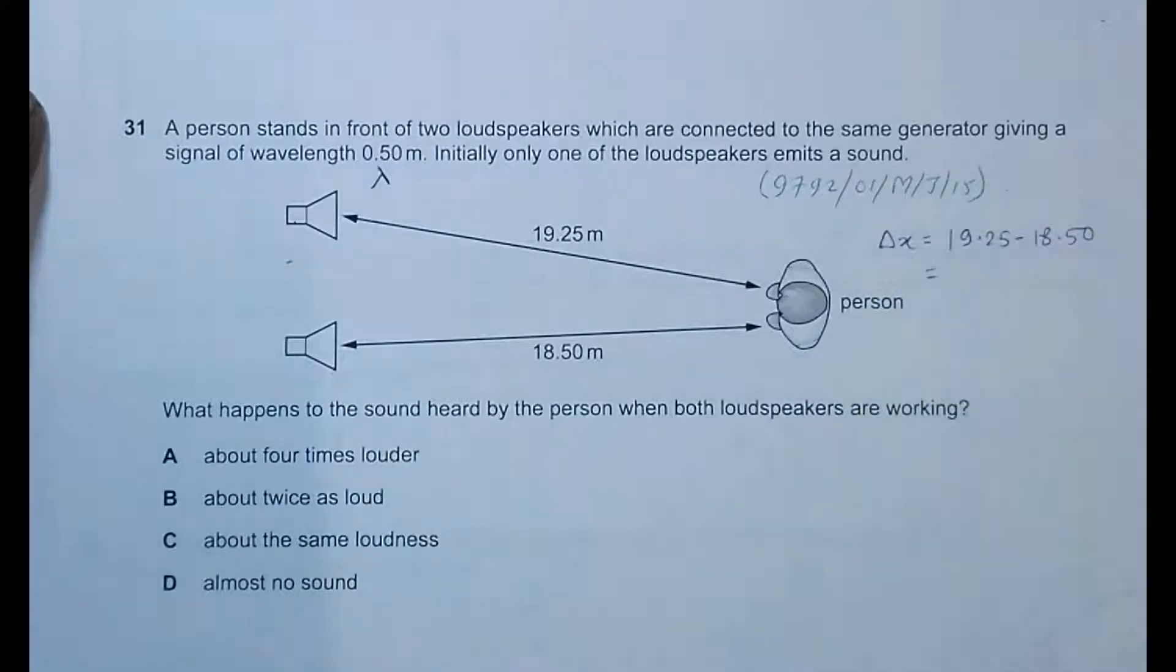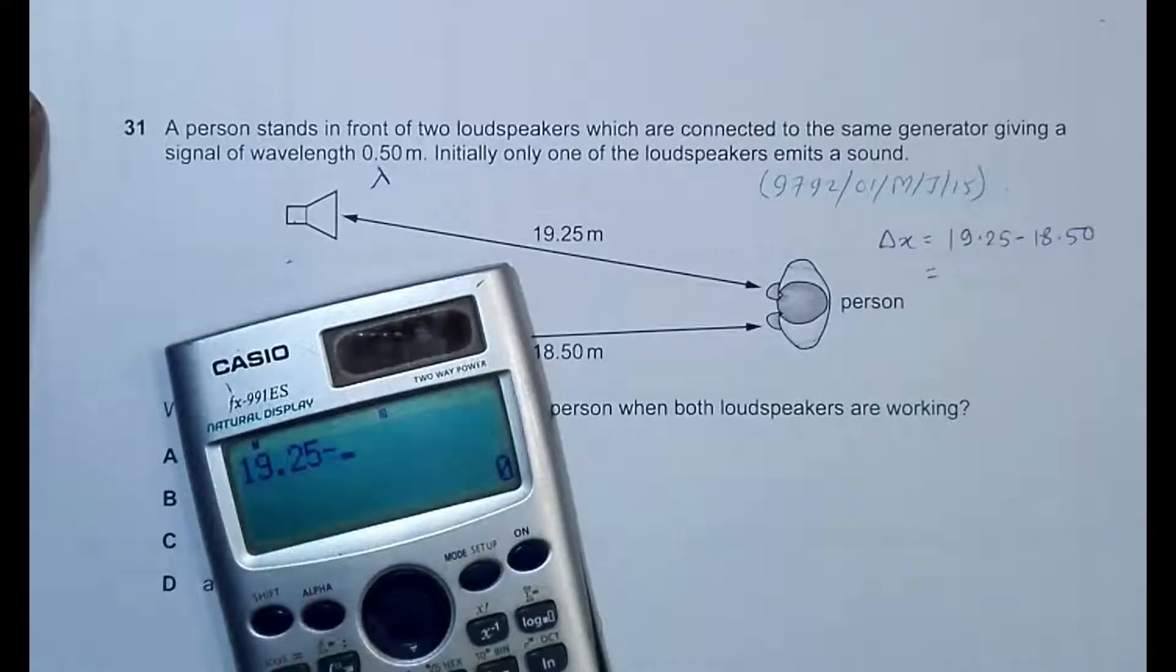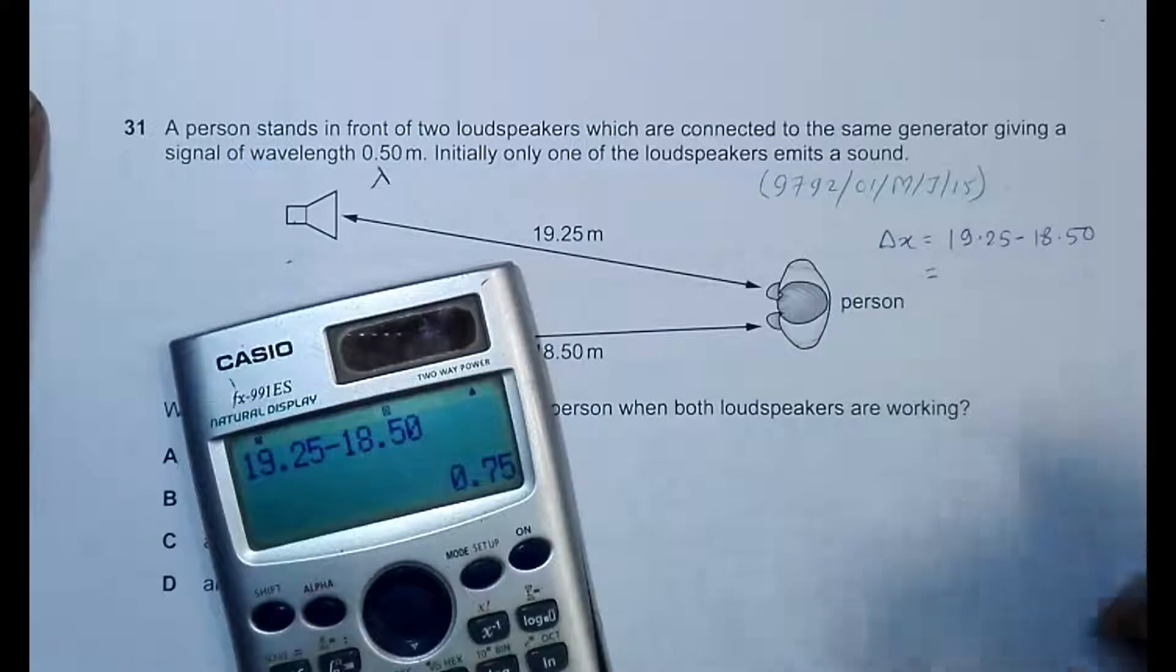That's equal to 19.25 minus 18.50 equals 0.75.